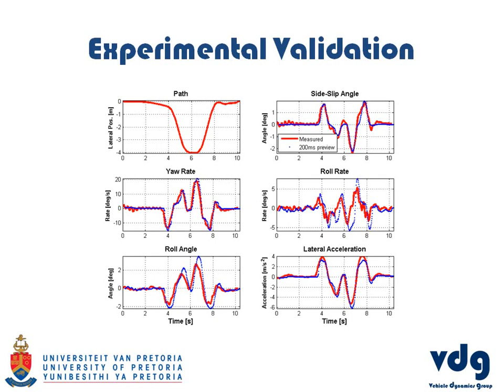This is the experimental validation of the preview model for 200 milliseconds during a double lane change, performed at about 70 to 75 kilometers per hour — which is about the maximum speed at which we can get the Land Rover through a double lane change without rolling. You can see the side slip angle, yaw rate, roll rate, roll angle, and lateral acceleration. The roll rate is a little less accurate, which comes back to the accuracy of the suspension forces — there are significant unknown friction forces in the suspension that have a major effect on vehicle dynamics.